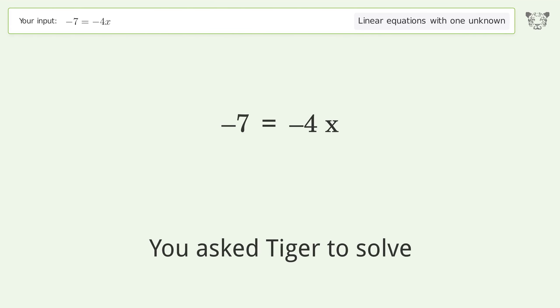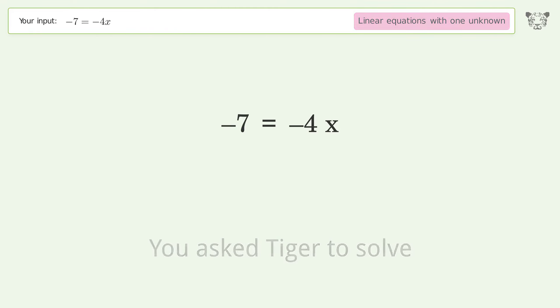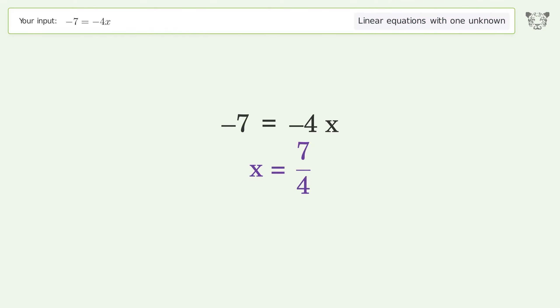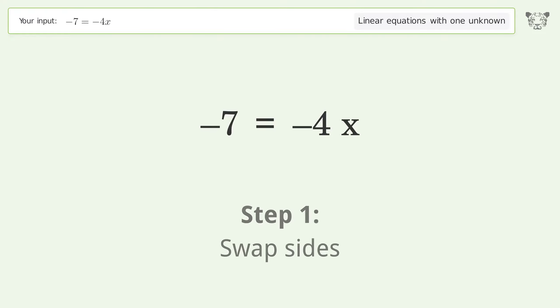You asked Tiger to solve this. It deals with linear equations with one unknown. The final result is x equals 7 over 4. Let's solve it step by step — swap sides.